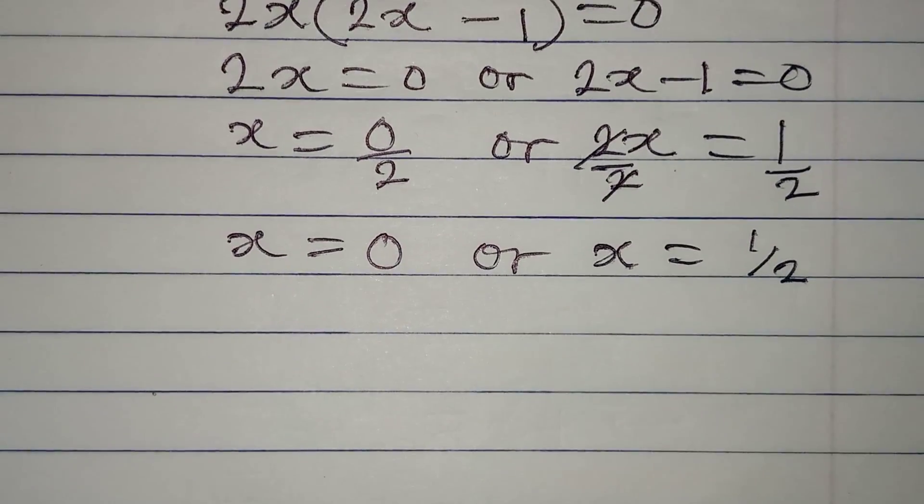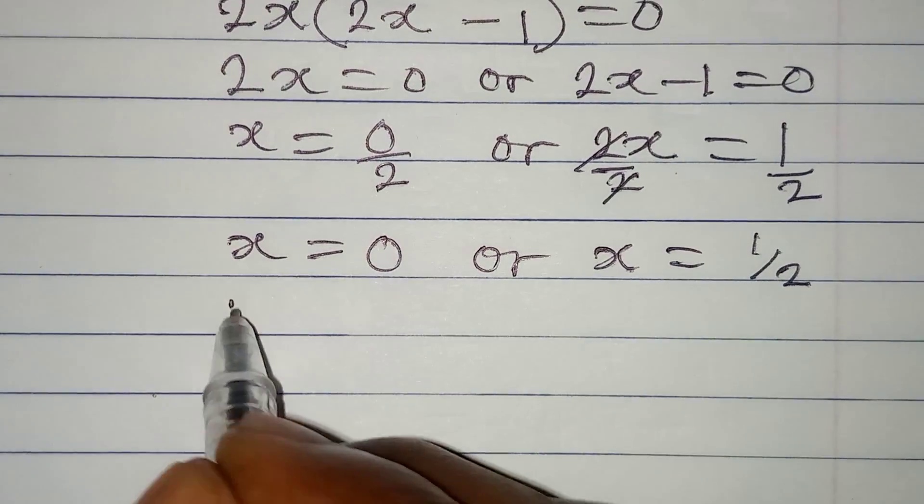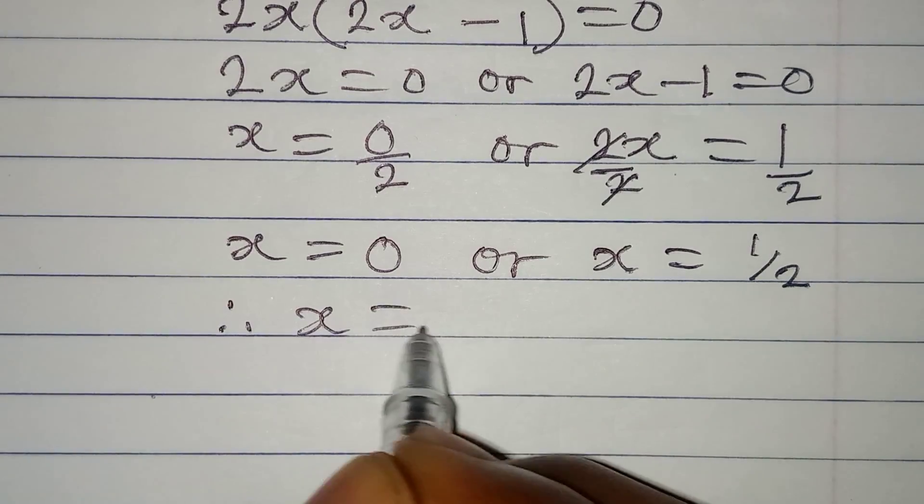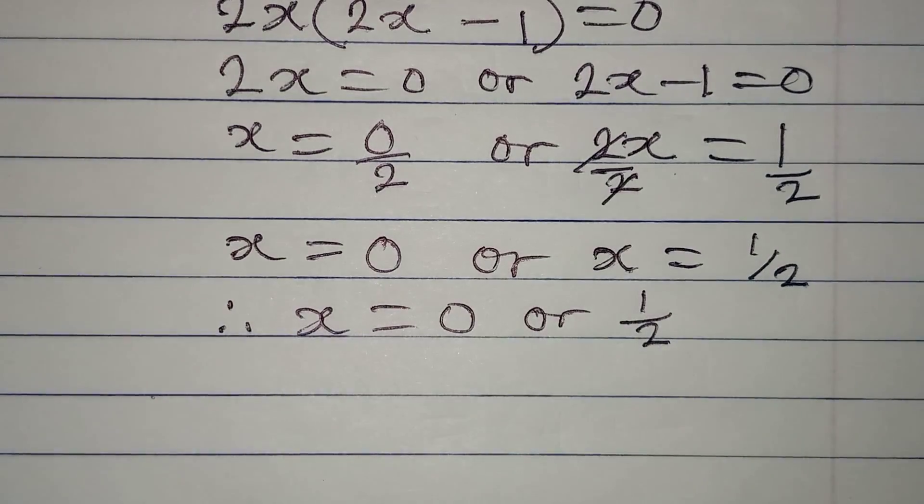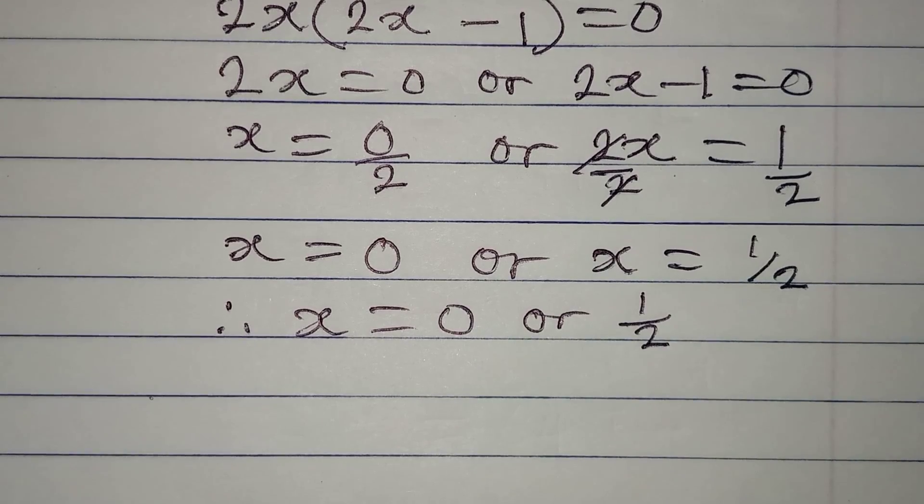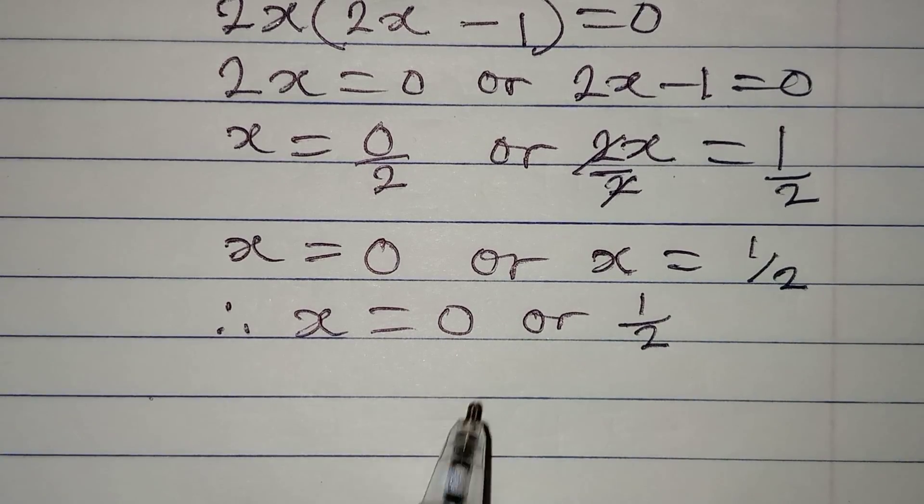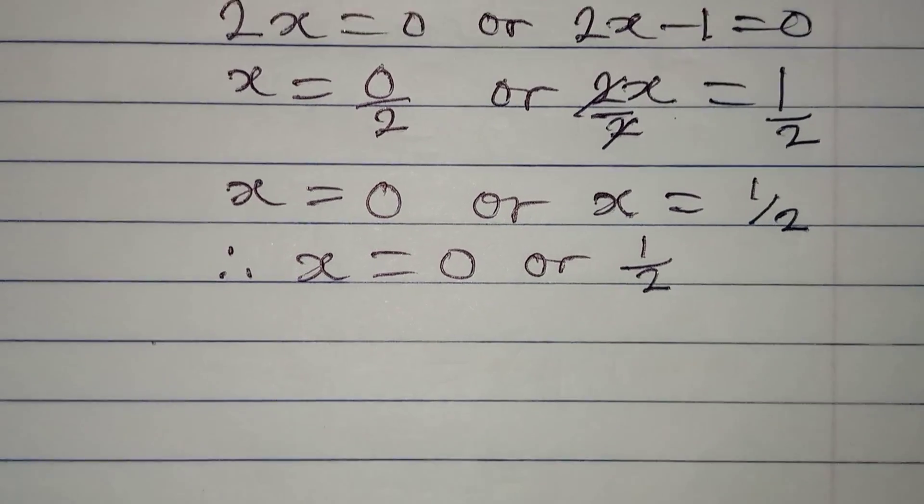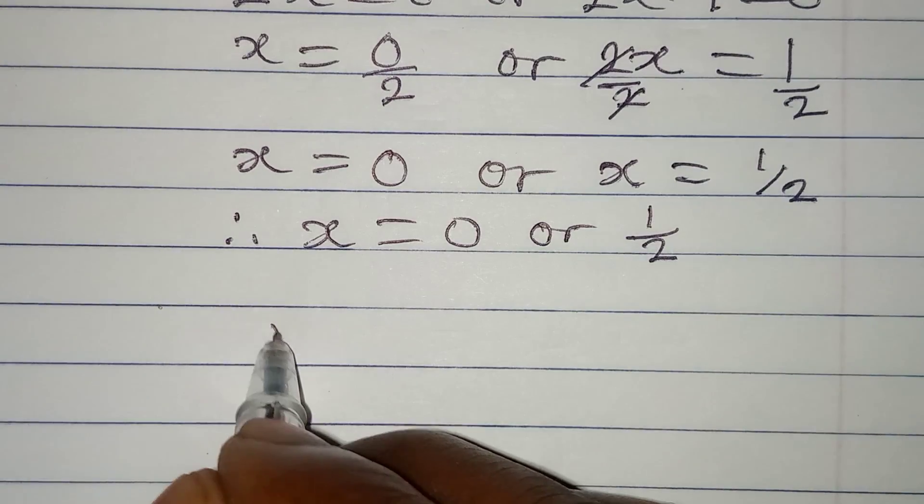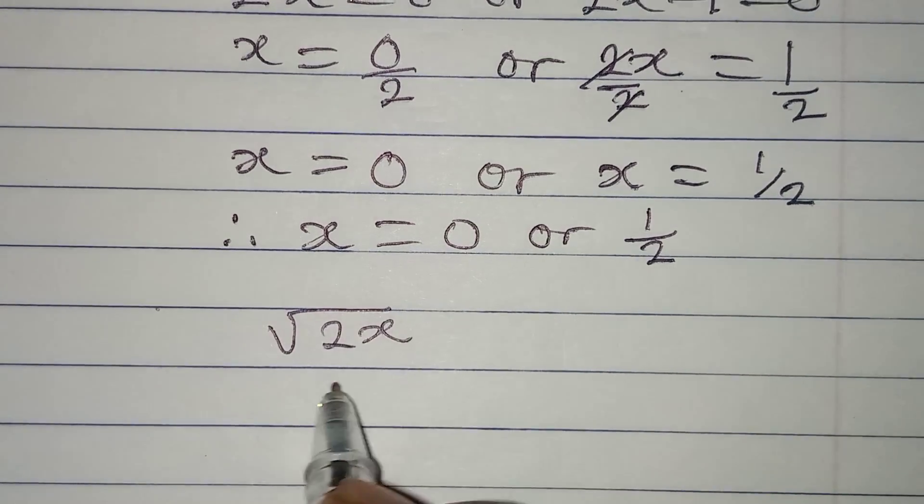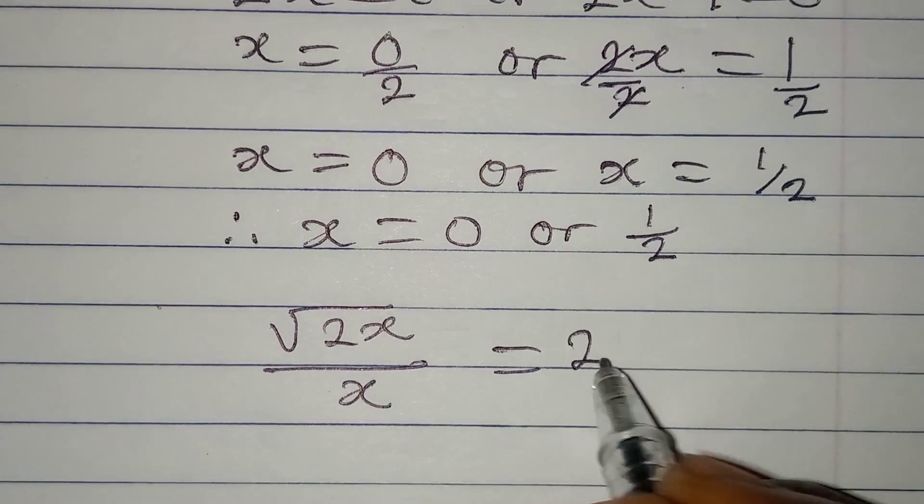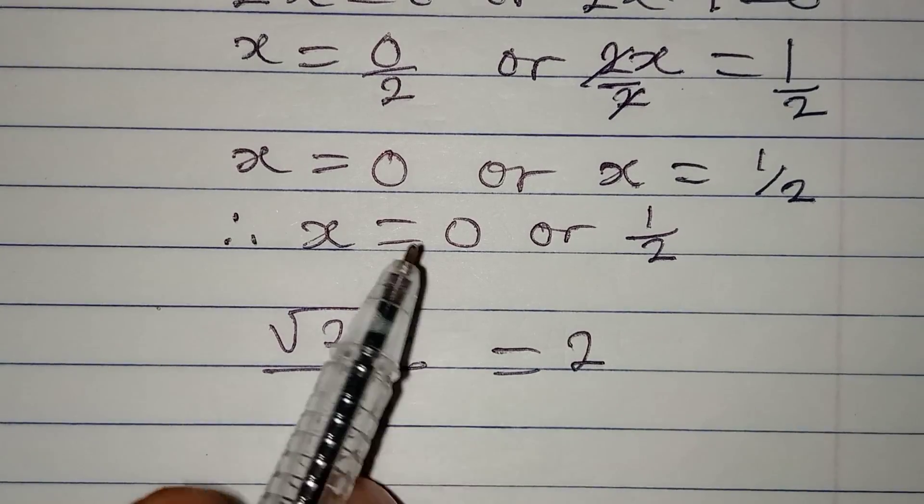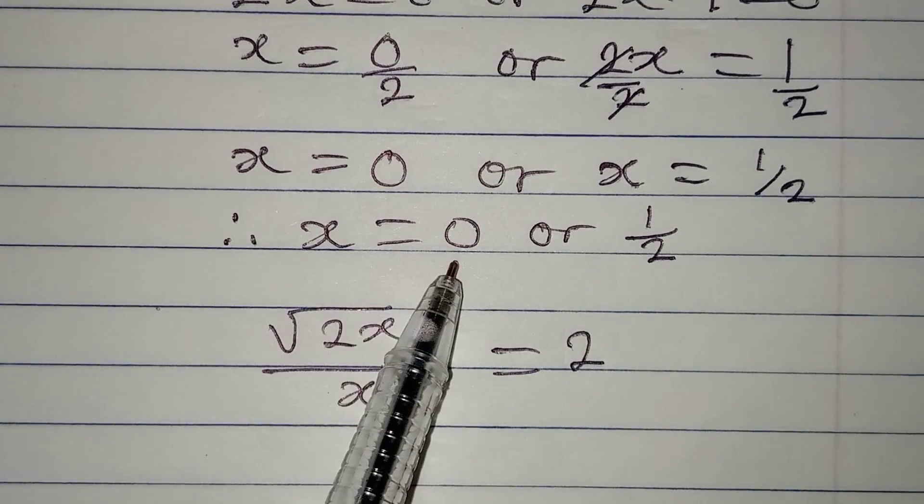Now we bring the two solutions together. Therefore x is equal to 0 or 1 over 2. But sometimes the two solutions may not satisfy the equation. Remember the original equation is square root of 2x over x equals 2. And then if we put in the value of x to be 0...